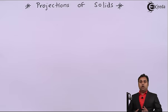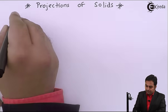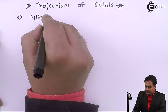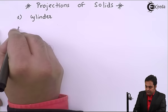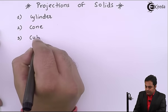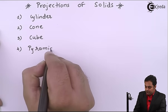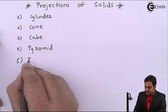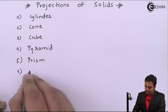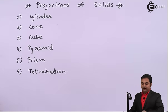In this, basically we need to know how many kinds of solids are there. Like for example, cylinder is considered as a solid. Then there is cone, cube, pyramid, prism, tetrahedron, and so on. These are the kinds of solids.